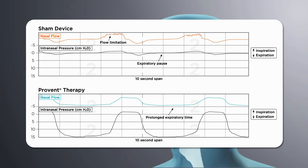The bottom panel shows the same patient with ProVent Therapy. The inspiratory flow limitation has been improved. Expiratory time has been prolonged, and the end-expiratory pause has been eliminated. In this patient, there is positive intranasal pressure of approximately 12 centimeters of water maintained until the start of the next inspiration.